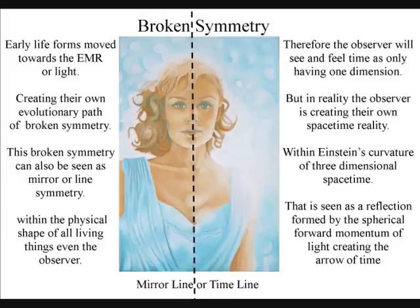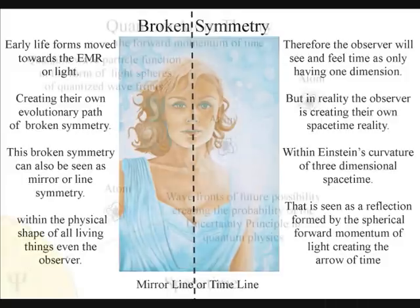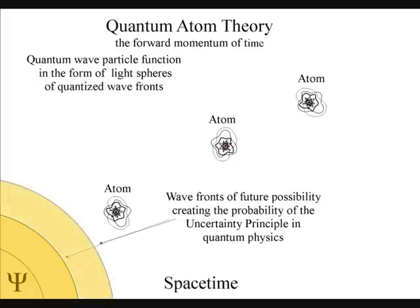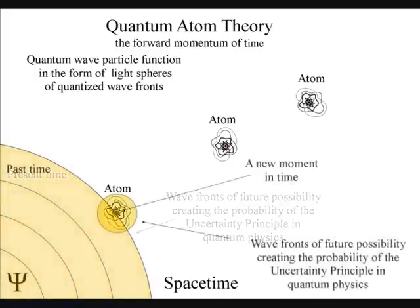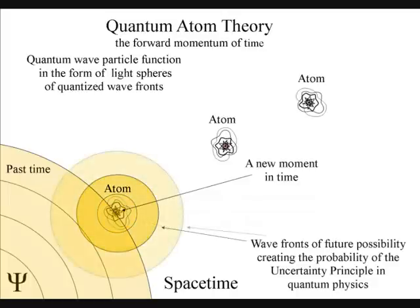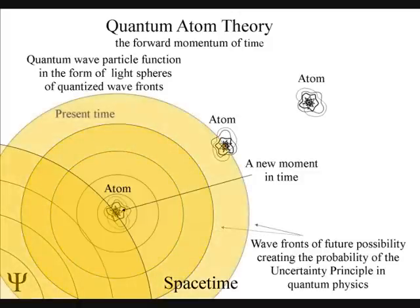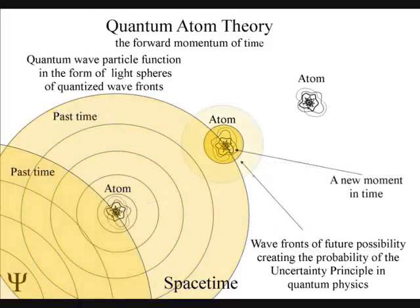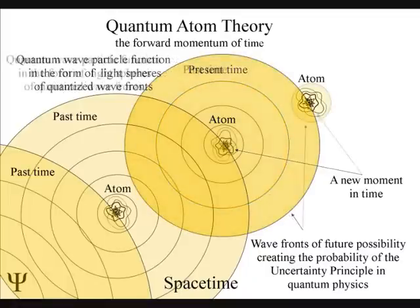To understand this we have to first look at how time is formed and the part we play in its formation. In this theory, the emission and absorption of light from one atom to another creates a forward motion of time. Each individual atom of our universe creates its own space-time geometry relative to its position and momentum.